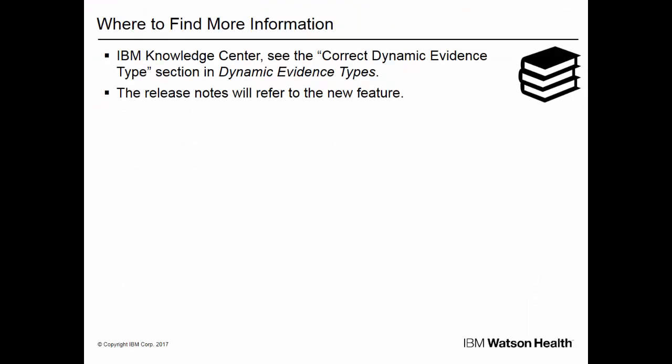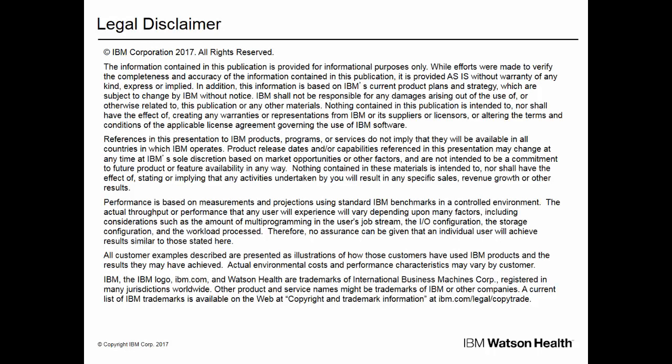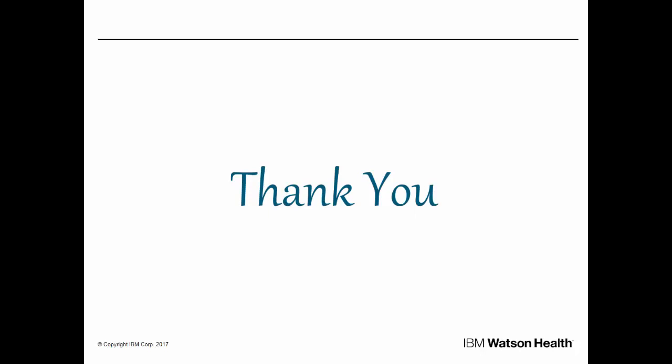You can find more information about this enhancement in the IBM Knowledge Center in the section entitled 'Correct Dynamic Evidence Type,' under the topic entitled 'Dynamic Evidence Types.' There's also more information in the release notes for Kuram Version 702. This concludes the presentation about the enhanced functionality around Dynamic Evidence Corrections in Kuram Social Program Management Version 702. Thank you for watching.